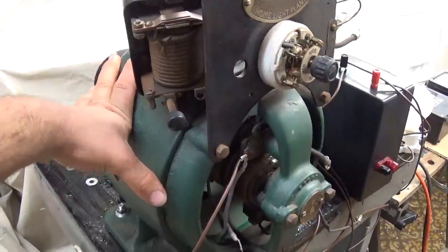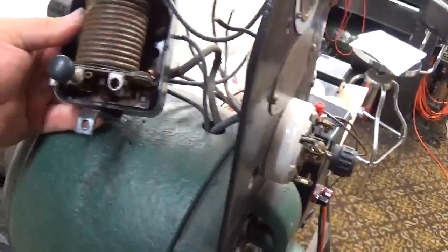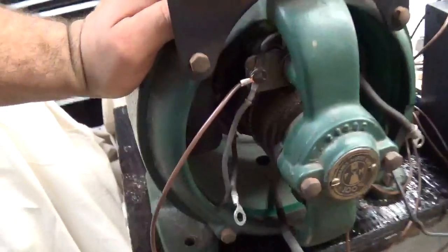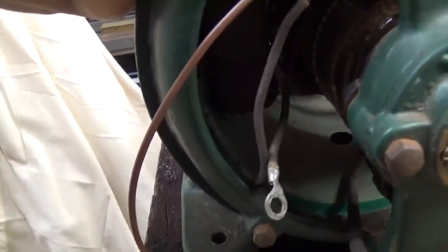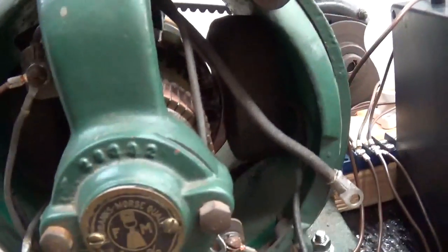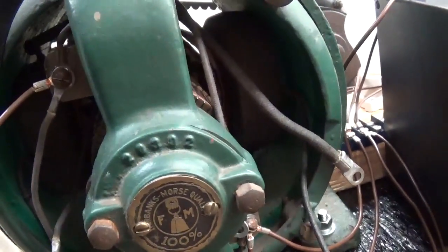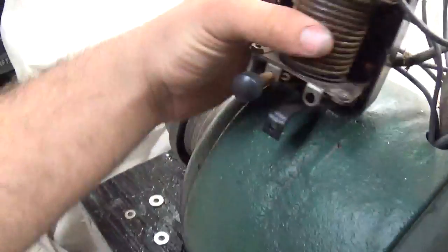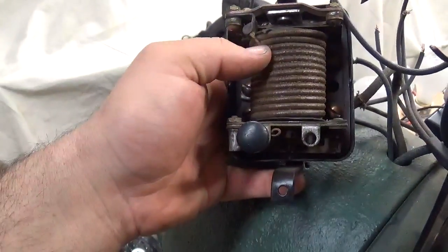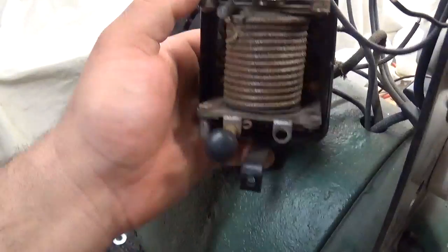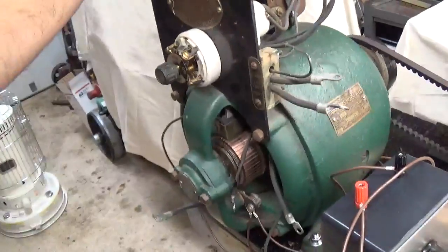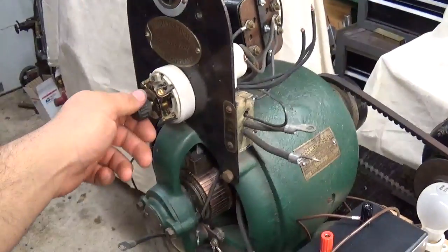So what he did was he took the generator head to a fella to have it rewound. And when I say that, they wound new field coils. It's a two pole generator, it's a really simple generator. They rewound the armature. I don't think they touched the voltage cutout. They just cleaned it up. And they rewound the field resistor.